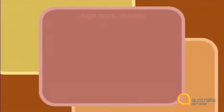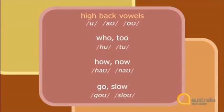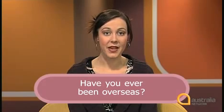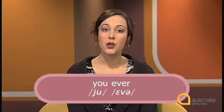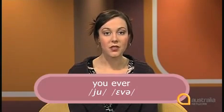High back vowels link with the w sound. High back vowels are oo, ao and o — sounds produced with the highest part of the tongue close to the back of the mouth. For example: who, to, how, now, go, slow. Look at the sentence: 'Have you ever been overseas?' Notice 'you ever' — 'you' ends with 'oo', a high back vowel, so it links with linking type two, the w sound. It becomes 'you ever'.